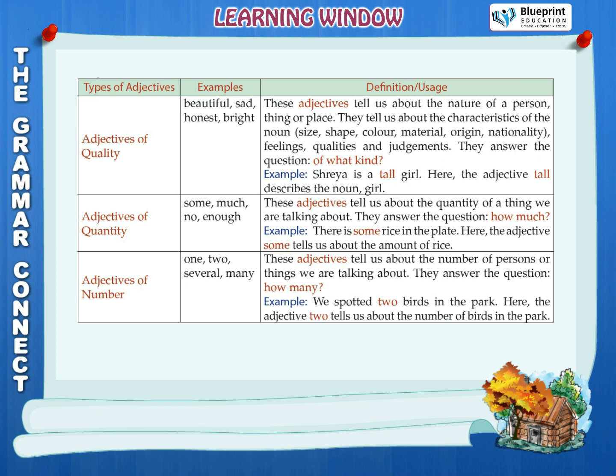Adjectives of number — examples: one, two, several, many. These adjectives tell us about the number of persons or things we are talking about. They answer the question: how many? Example: We spotted two birds in the park — here the adjective 'two' tells us about the number of birds in the park.